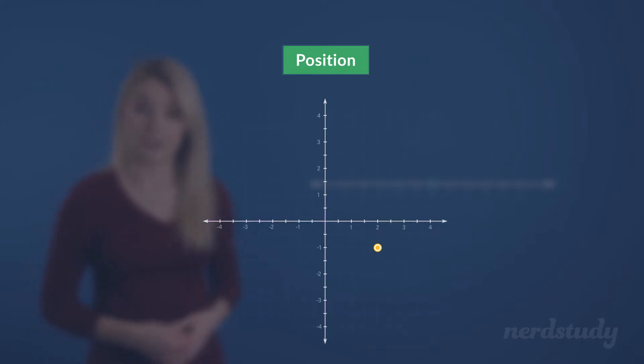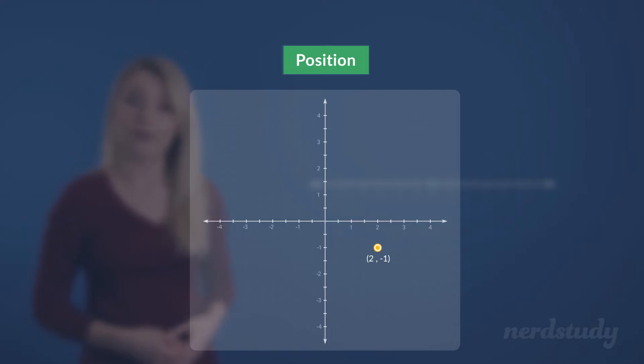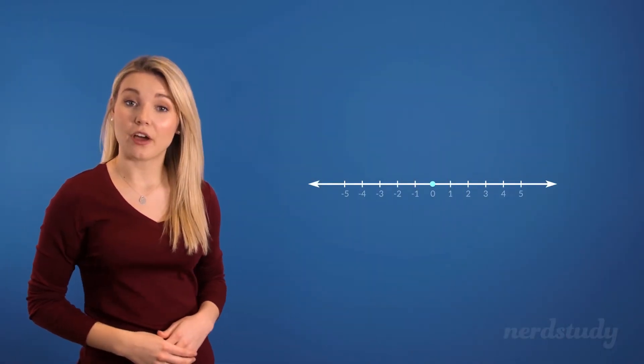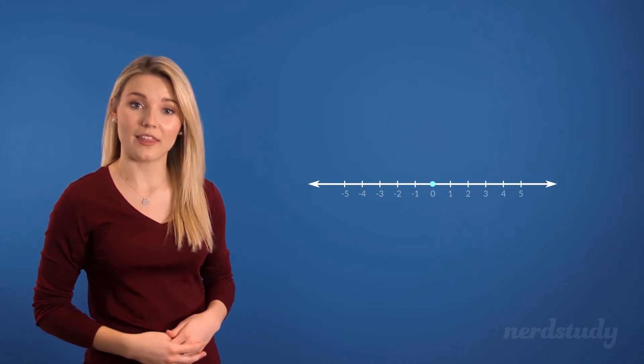Then we could represent the position as a list of numbers, 2, negative 1. In fact, this list of numbers is just the coordinates of a point on a plot. Great! So now we know how to talk about the position of things relative to the origin.